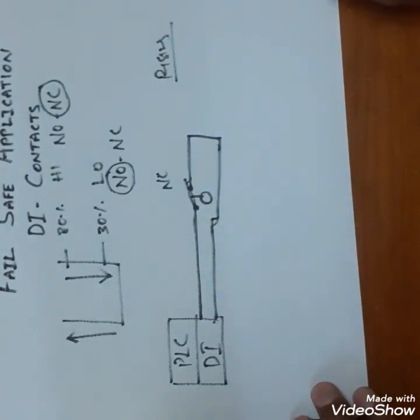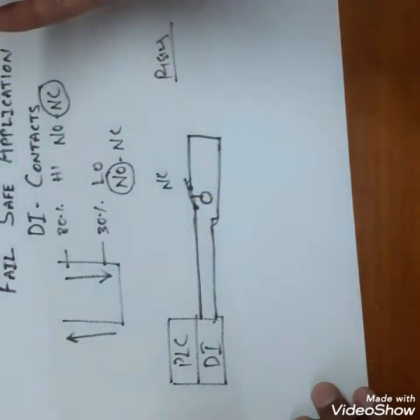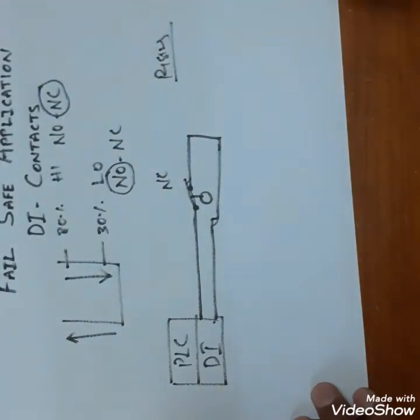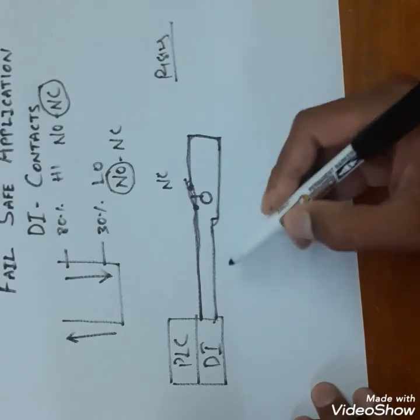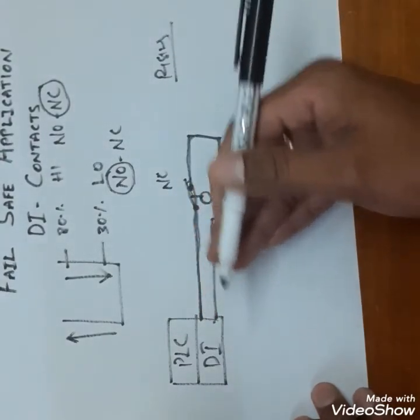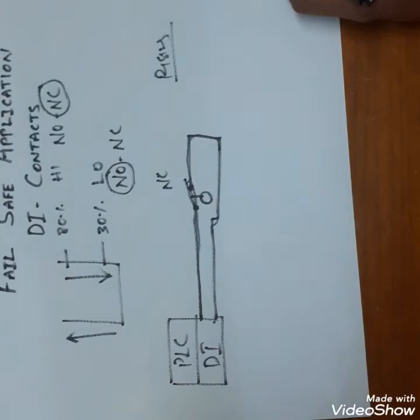When level goes above 80 percent and reaches 80 percent or more than 80 percent, it becomes NO and you will get the high level alarm. The loop is always in closed loop, so if in between the wire was damaged, the fuse was blown, or something happened in this loop, it will become NO and you will get the alarm.